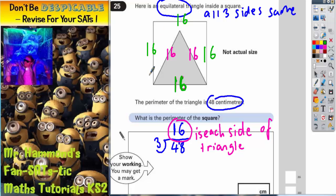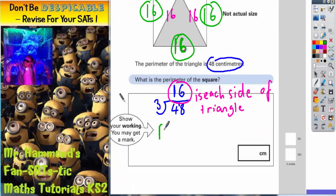So what we actually need to do is do 4 lots of 16, and that will give us the total perimeter of the square. So perimeter of square equals 16 times by 4.